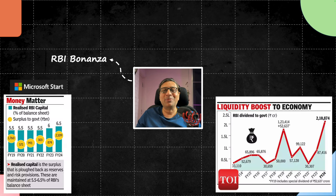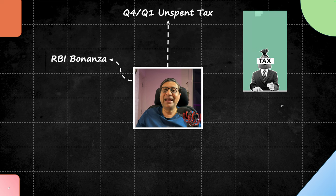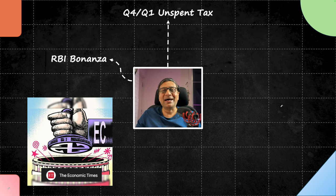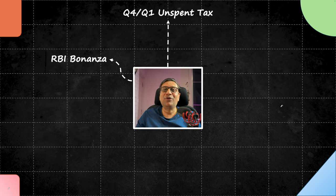RBI has given ₹2,10,000 crore rupees to the government as an extraordinary payout — a dividend or the money left from the previous year. This money cannot be spent by the old government at all. The new government starting around mid-June will have this money available for budgeting the expenditure of the remaining financial year — this is close to half a percent of GDP. Significant tax collected in Q4 of last financial year has not yet been spent; it was to be spent in Q1 but Q1 was essentially a political quarter with election overdrive and election commission restrictions, so a lot of money is unspent.